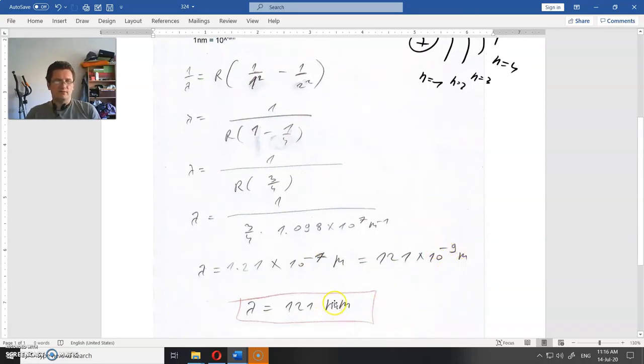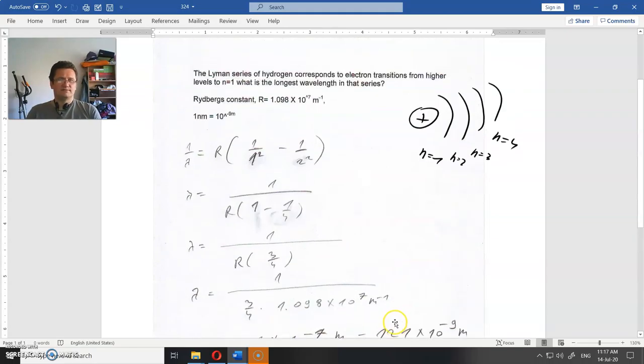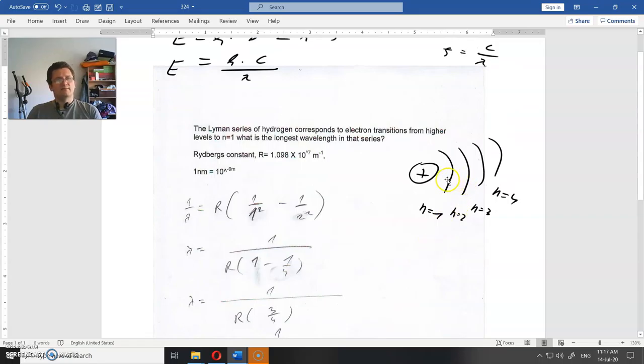10 to the minus 9 is actually nanometers. 10 to the minus 9 is actually nano. So that wavelength is 121 nanometers when it passes from here to here. Now you could calculate what the wavelength would be if it passes from here to here.